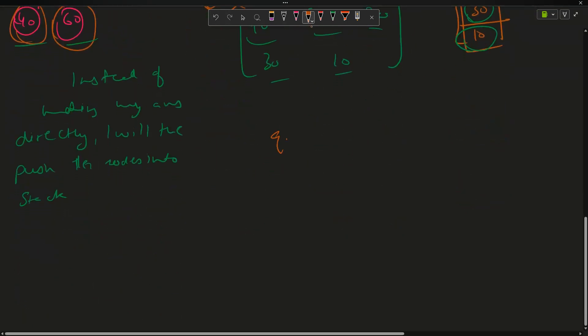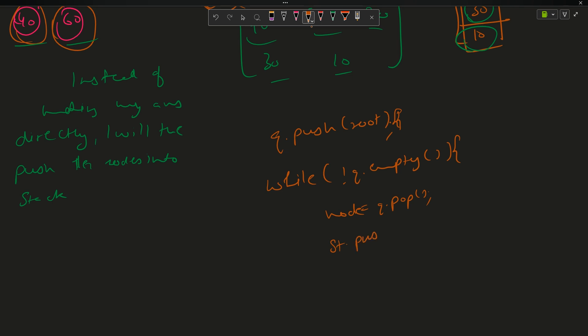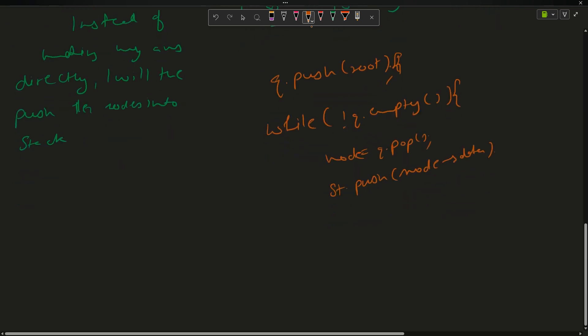So what I will be doing is queue dot push root. Now while queue is not empty, what are we doing is we are saying that my node equals to queue dot pop. Now I will push that node into my stack, so stack dot push, I only want the data so node data. And now I will explore right and left. Explore first right and then left of my node.